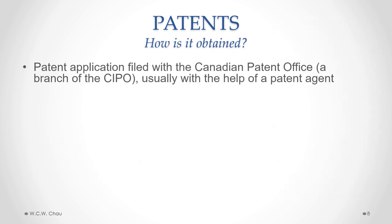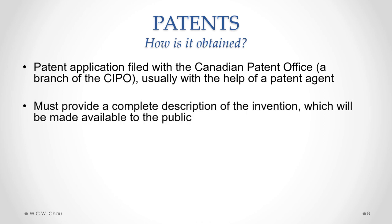How do you obtain a patent? A patent is obtained by filing an application with the Canadian Patent Office, and you usually need to hire a patent agent to help prepare the application. That application has to provide a complete description of the invention, which is then made available to the public. The process is not quick — it can take two to five years and is fairly costly.